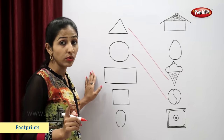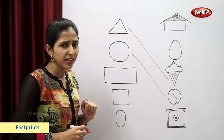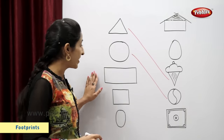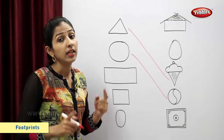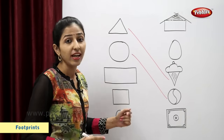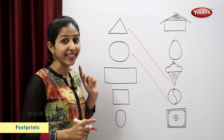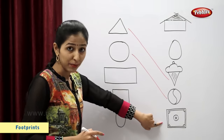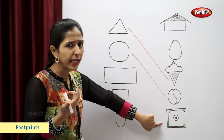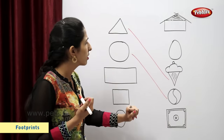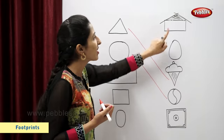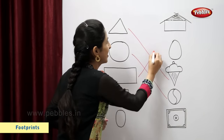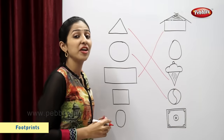Now you tell me students, which is this shape? Correct. This is a rectangle. Now you tell me which is the figure similar to this rectangle? Hut. Very good.